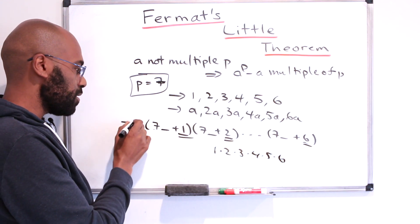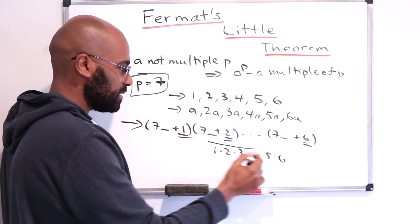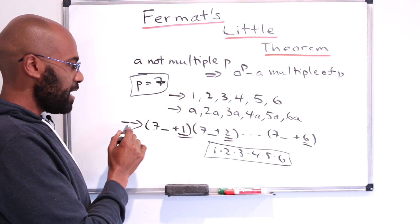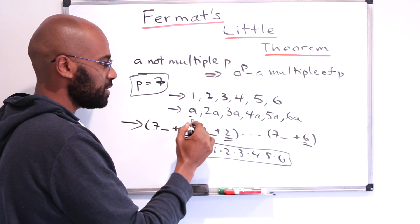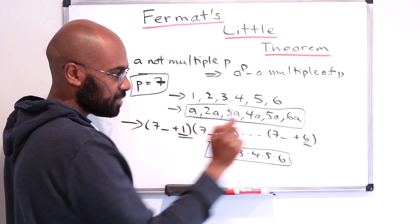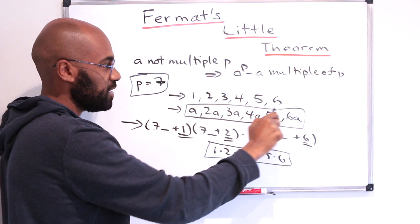So this number, when divided by 7, has the same remainder as this when divided by 7. Now this was a representation of the product of these things. So that means that when you take the product of these things, it leaves the same remainder when you divide by 7 as the product of these things.